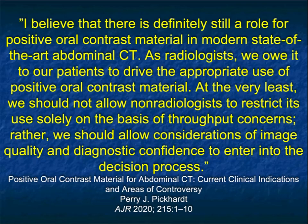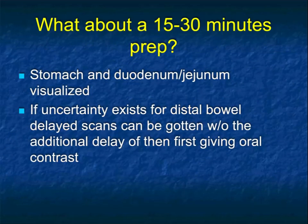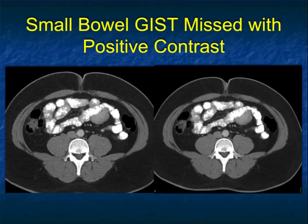As you're designing protocols, oral contrast is a key part. Even a short 15-minute prep gives you the stomach and lets you detect perforation, occult gastric tumors, and bowel pathology in the duodenum or jejunum. If you need to come back for more imaging, at least the contrast is already on board. Something is better than nothing.